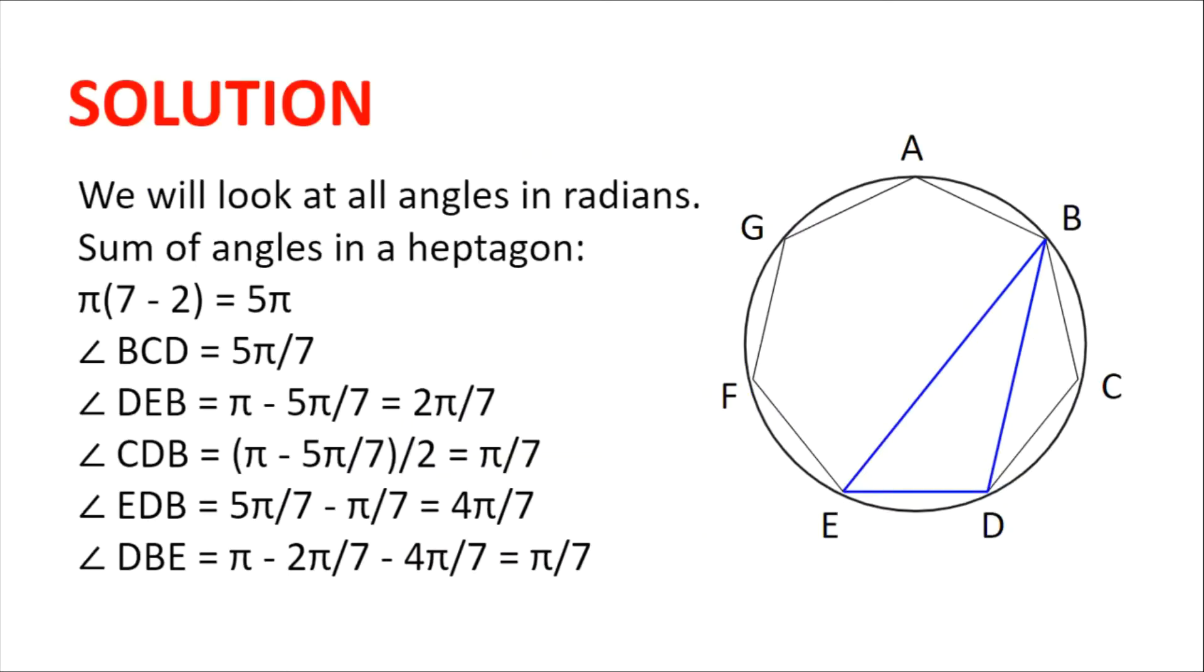We will look at all angles in radians to make the calculations easier. The sum of angles in a heptagon is π(7-2) = 5π. Since angle BCD is the angle of a regular heptagon, that angle is 5π/7.